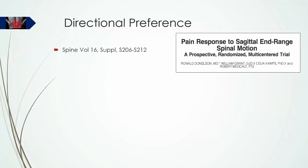Directional preference is a concept first described in general terms by Robin McKenzie in the 1970s and 1980s, but named as such by Ronald Donaldson and co-authors in a study published in Spine in 1991.